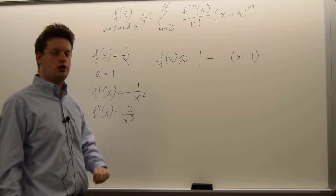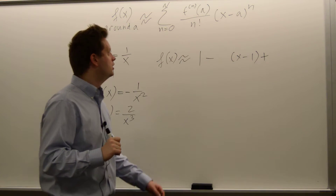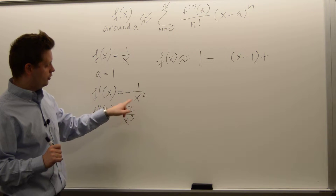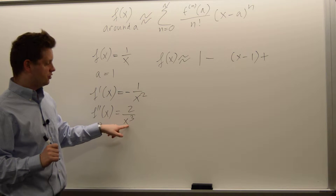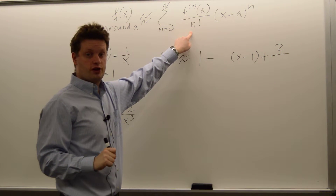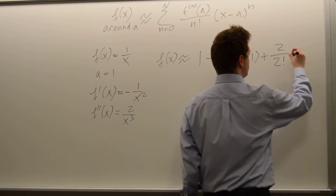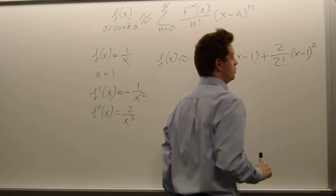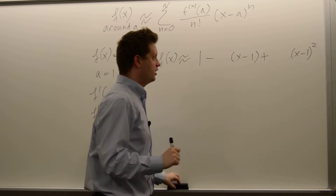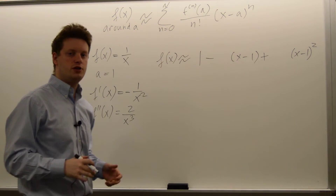Let's add the second-order Taylor approximation by setting little n equal to 2, giving us a third term. The second derivative at point a: 1 to the power of 3 is 1, so it's 2 over 1. We get 2 over 2 factorial times x minus 1 squared. The twos cancel and we're left with 1 minus (x minus 1) plus (x minus 1) squared. That's our second-order Taylor approximation for the one variable case.